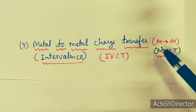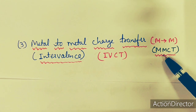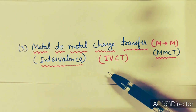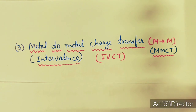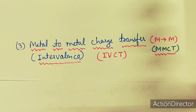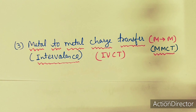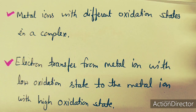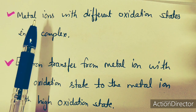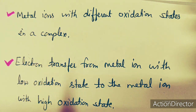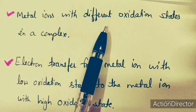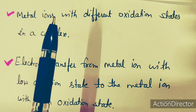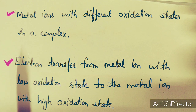In this case the electrons will transfer from one metal to another metal. It is known as MMCT or intervalence because inside a single complex you will find that electron will transfer from one metal to other metal. This kind of charge transfer occurs in complexes where the metal ions have different oxidation states — this is a prerequisite for a complex to show M to M type charge transfer transition.